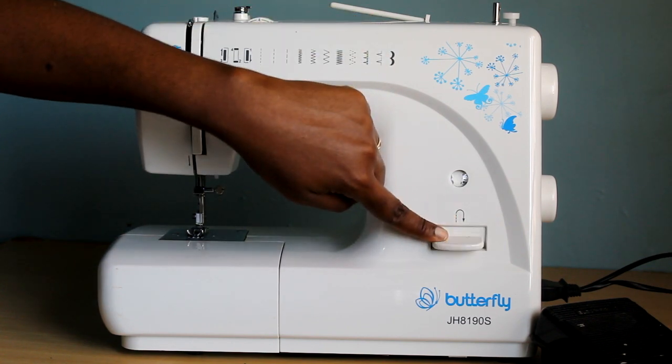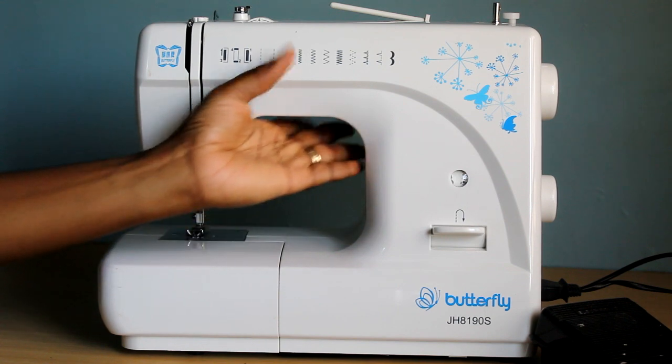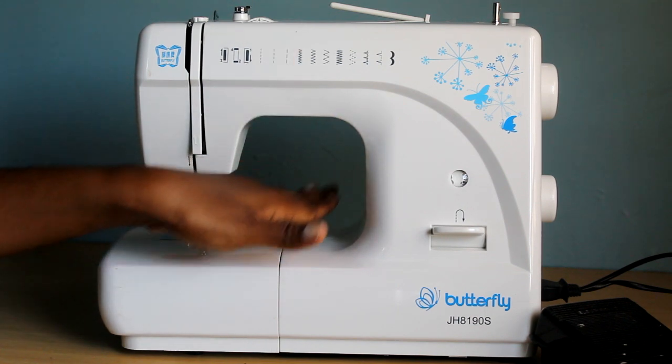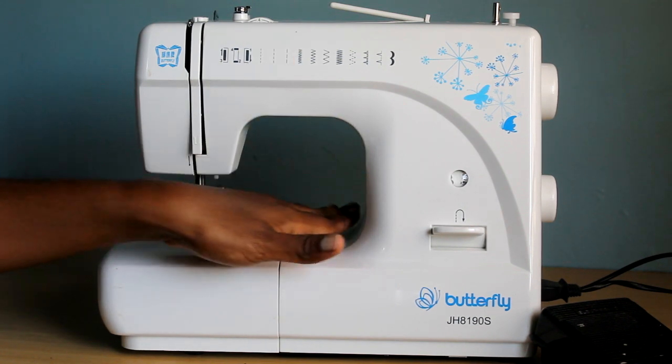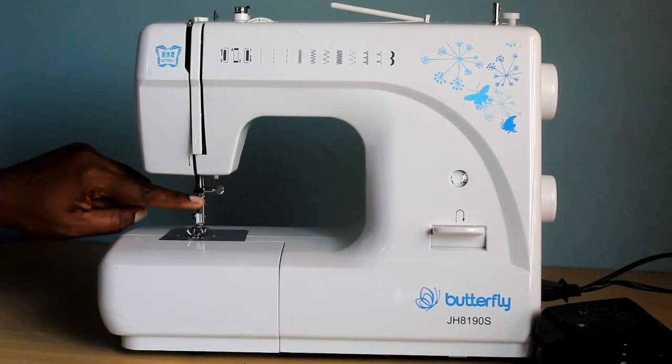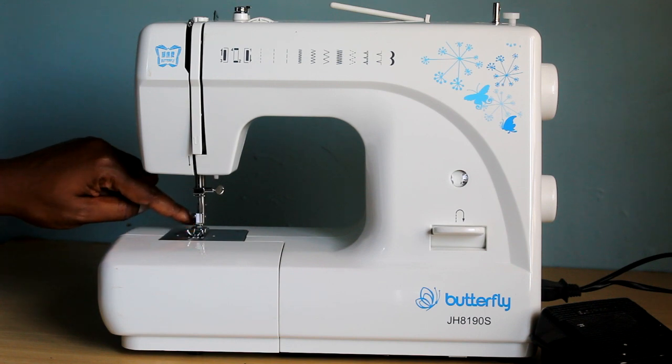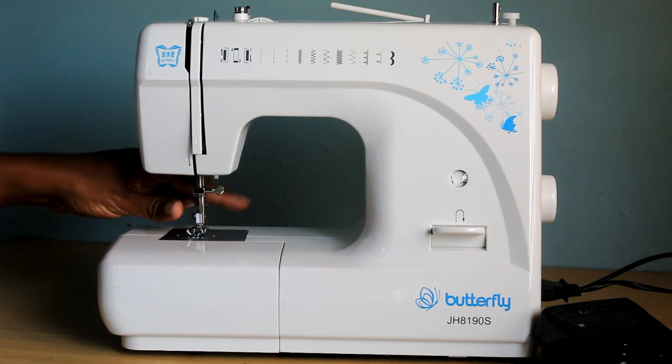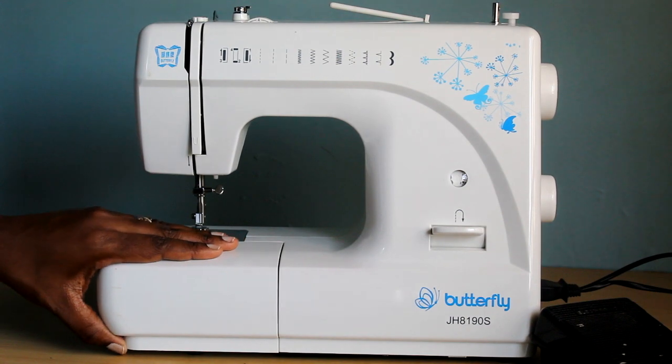You have the arm of the machine, you have your throat space here which is about five inches in this machine, and you have your bed. The needle plate is here, you have your needle, your presser foot and presser foot holder. I'll zoom in closer for that.